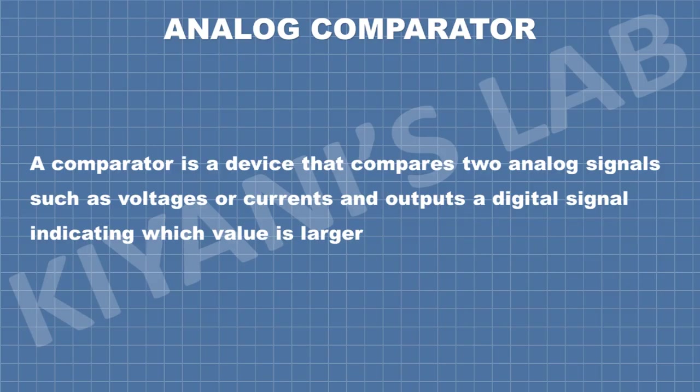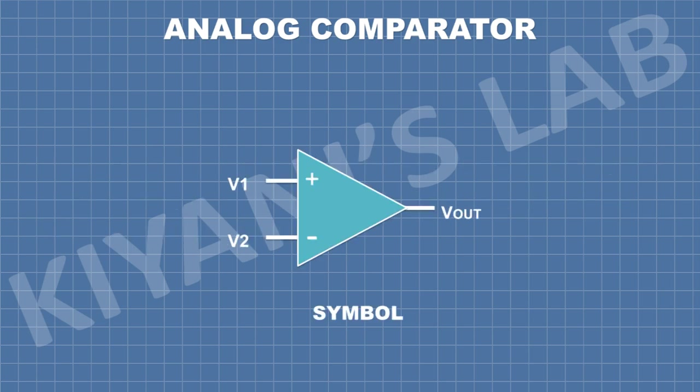An analog comparator is a device that compares two analog signals such as voltages or currents and outputs a digital signal indicating which value is larger. This is the symbol of an analog comparator. Analog comparators have two inputs, V1 and V2, and an output which is V-out.